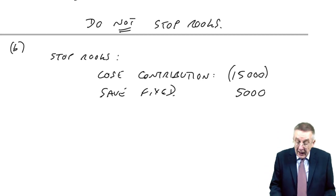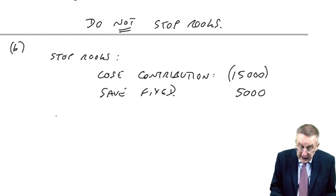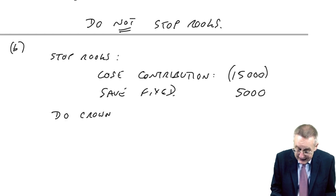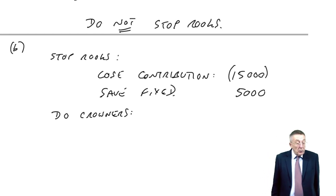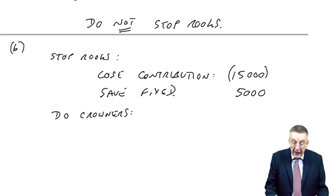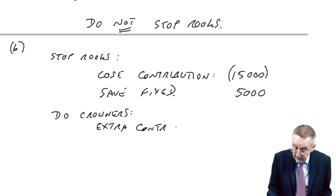But what are we doing this time? We're going to stop rooks, but we're also going to do crowners. We'll get extra contribution from crowners, and that will push the profit up.